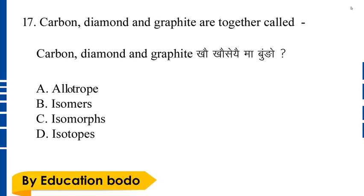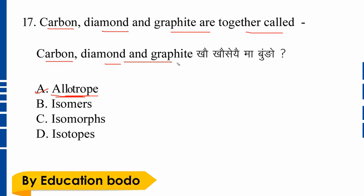Question number seventeen: Carbon, diamond, and graphite are together called what? Option A is the correct answer — Allotropes of carbon.